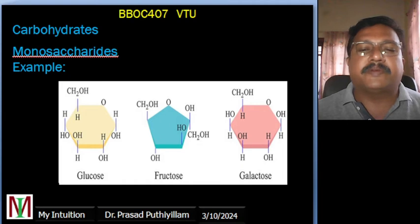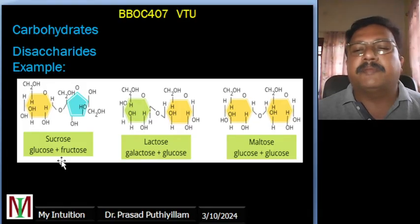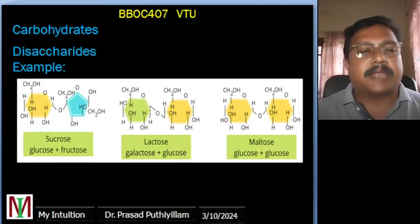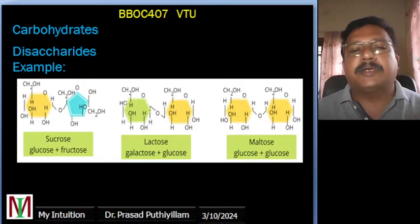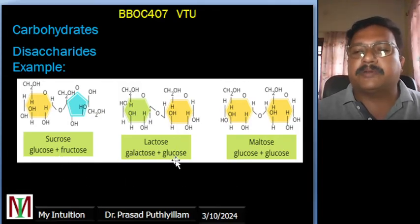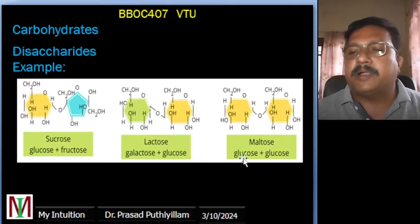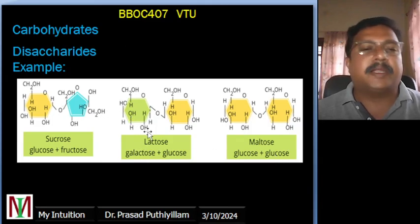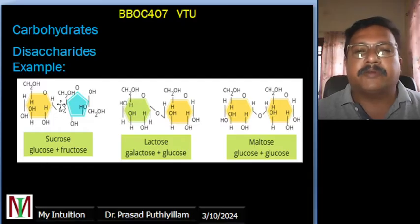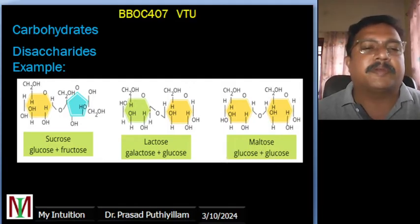Disaccharides — di means two — are formed by the condensation of two monosaccharides, which include sucrose, lactose, and maltose. They are commonly found in sugars and are broken down to monosaccharides during digestion. Sucrose is made up of glucose and fructose; lactose contains galactose and glucose; maltose contains glucose and glucose. When sucrose breaks down it gives glucose and fructose, lactose gives galactose and glucose, and maltose gives glucose and glucose.